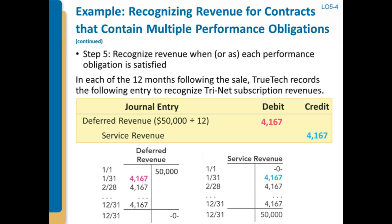We'll book the deferred revenue associated with the tri-net subscriptions, set up that liability, and then over time take that liability down. Because only $50,000 was allocated to the liability rather than $60,000 as a standalone, we had $50,000 of deferred revenue and we're going to recognize less revenue each period — but we'll still take deferred revenue down to zero and recognize service revenue as we go.